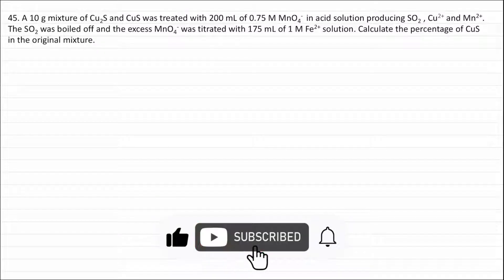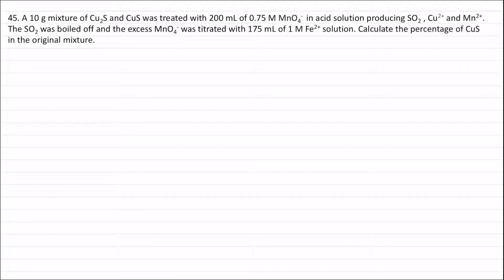Question 45. A 10 gram mixture of Cu₂S and CuS was treated with 200 ml of 0.75M MnO₄⁻ in acid solution, producing sulfur dioxide, Cu²⁺ and Mn²⁺. The sulfur dioxide was boiled off and the excess MnO₄⁻ was titrated with 175 ml of 1M Fe²⁺ solution. Calculate the percentage of CuS in the original mixture.